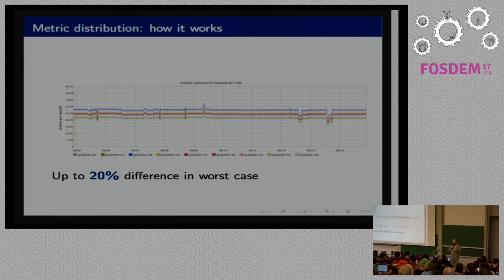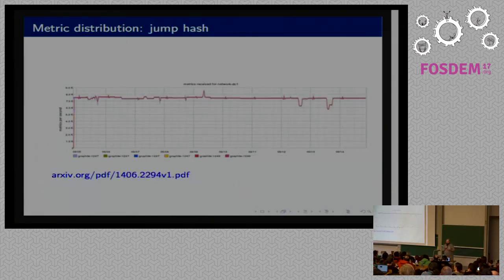Another problem we saw was metric distribution. We set up several small clusters, from four to eight or maybe ten servers each for different purposes. At some point, when we started receiving a lot of metrics, we saw a really interesting pattern that the most busiest server received around 20% more load than the least busiest one. We started to think about how to fix this. We found that the root cause was that our metric names were not playing well with the Carbon consistent hashing algorithm. We started to look around to find something better than Carbon consistent hash. We actually found an interesting white paper from Google about Jump consistent hashing algorithm.